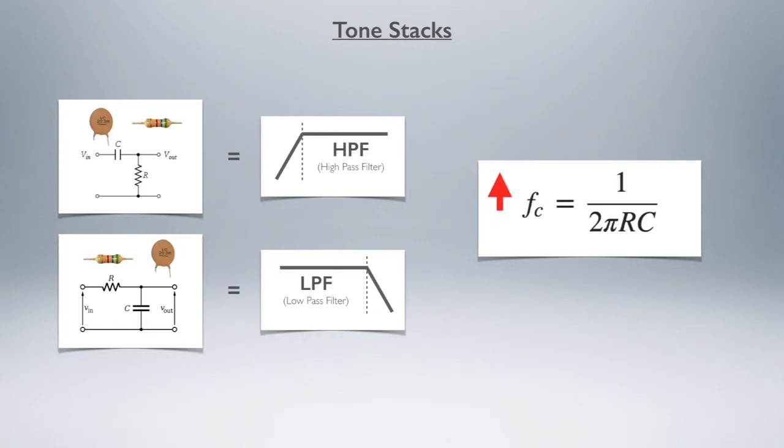Basically, your cutoff frequency, as that goes up - in other words, look at our high-pass filter - as that goes up, it's moved to the right. On the low-pass filter, it's moved to the right as well. If your filter cutoff frequency goes up, it's going to be because your R and your C values have gone down. Don't worry about the rest of the equation, let's just look at your cutoff frequency and your values of your resistor and capacitor.